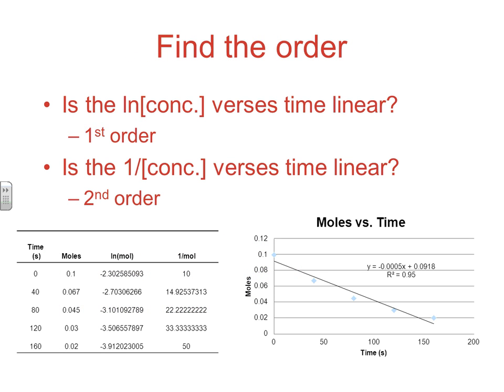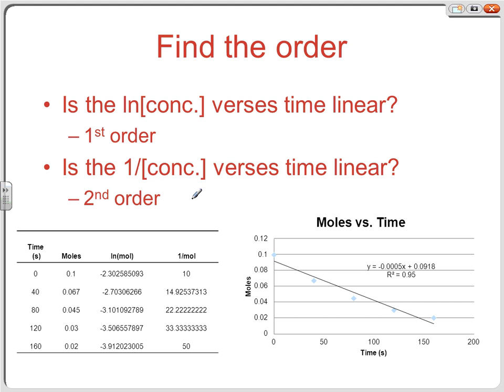If concentration versus time were linear, it would be zero order — but that didn't happen. So we look at the natural log and the reciprocal graphs. Looking at the moles versus time graph, the points are clearly not linear, and the R-squared of 0.95 bears that out. When R-squared equals 1 you have a linear relationship; the more it deviates from 1, the less linear it is. So moles versus time is not linear — it's not zero order.